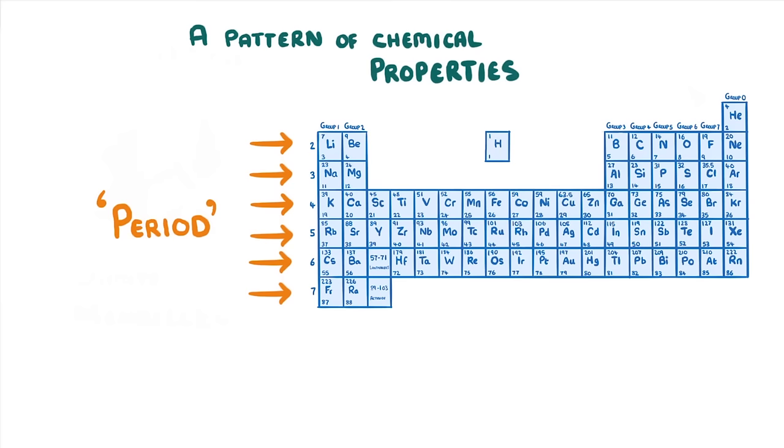Because the patterns repeat with each new period, the elements in each vertical column have similar chemical properties, and we call each of these columns a group, starting with 1 on the far left, and going to 7. So here we're looking at group 2.